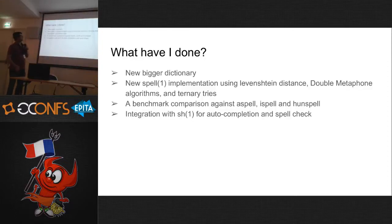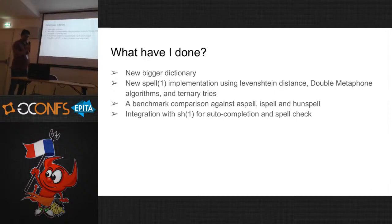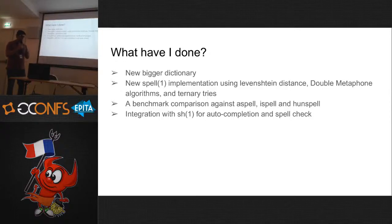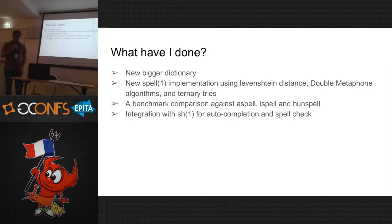As part of this project, these are the four major things I've done. I've created a bigger dictionary because the existing dictionary in NetBSD — usr/share/dict/words — doesn't have all the words. I worked on expanding it. I also wrote a new spell implementation using algorithms including edit distance, double metaphone, and tries. I compared performance against other open source spell implementations such as aspell, ispell, and hunspell. And I tried to integrate the new implementation with the shell to show how easy integration can be.